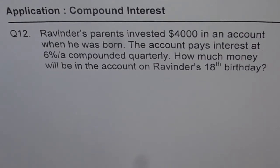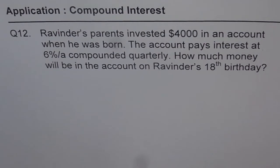Question number 12 is an application problem involving compound interest. Ravinder's parents invested $4,000 in an account when he was born. The account pays interest at 6% per annum compounded quarterly. How much money will be in the account on Ravinder's 18th birthday?